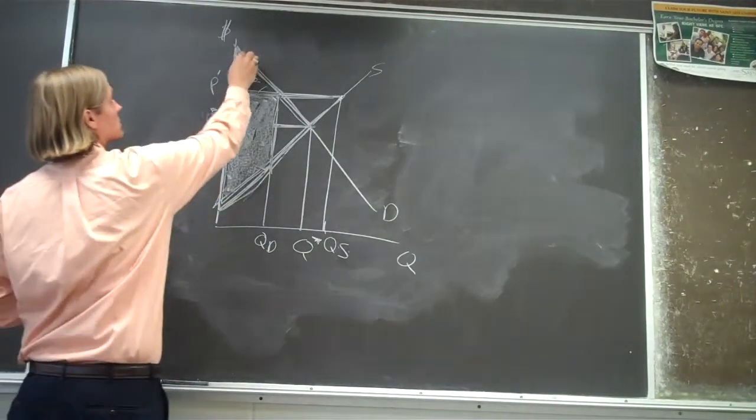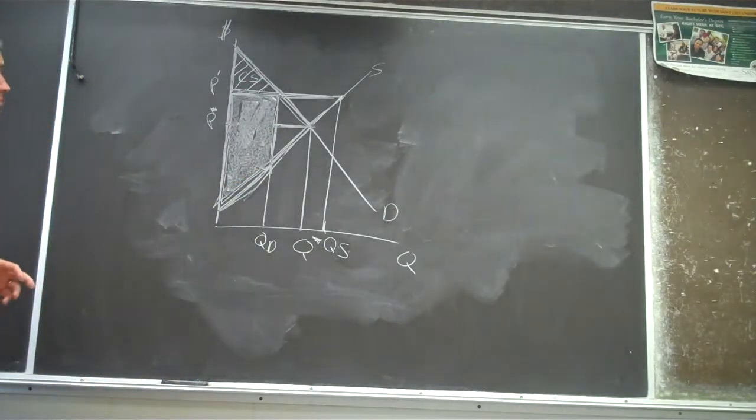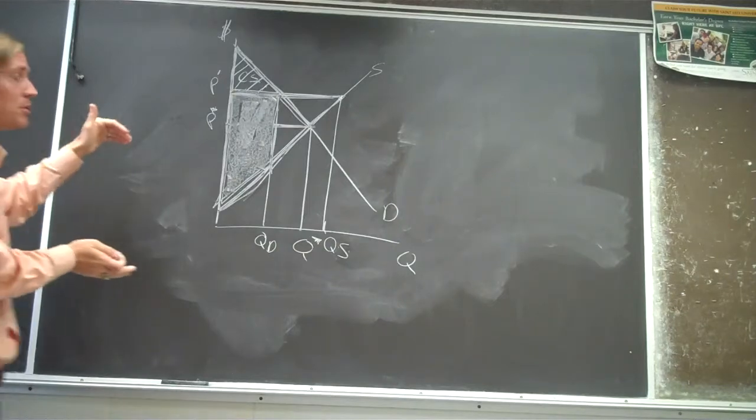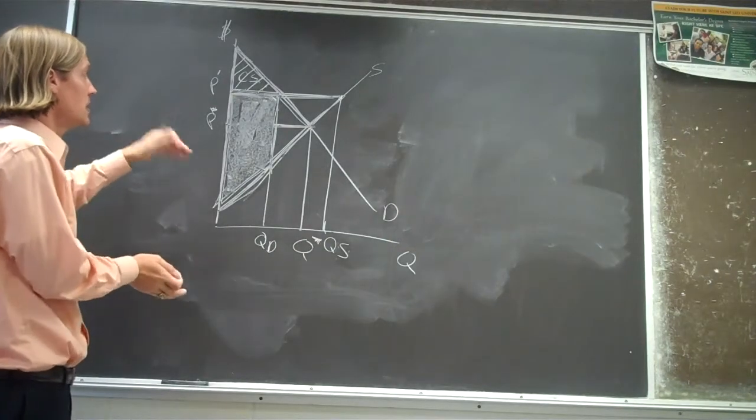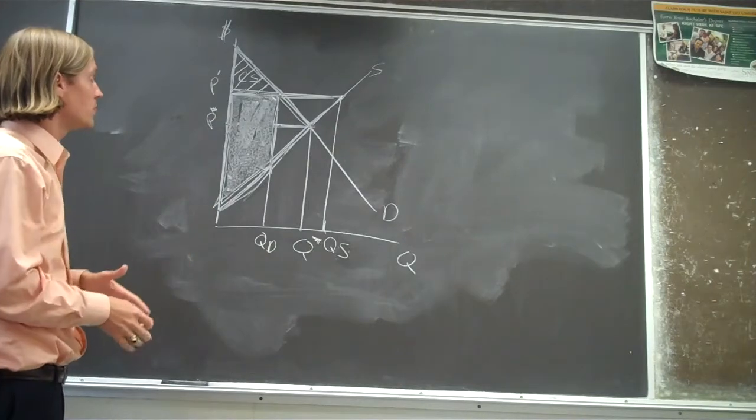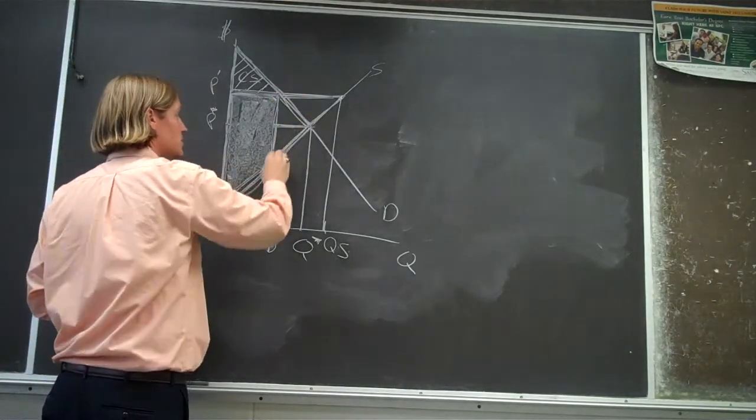Consumer surplus was this area, right? So if you look at before the price floor was put in place and after the price floor was put in place, you can see that the total welfare change, the total loss in welfare, was this triangle.